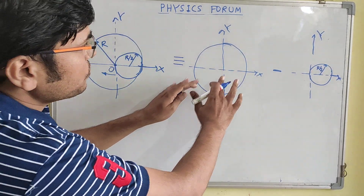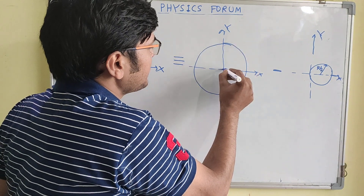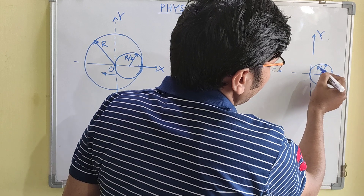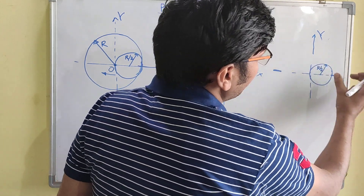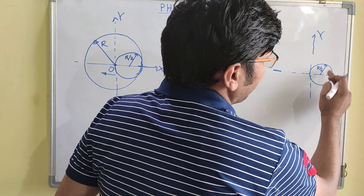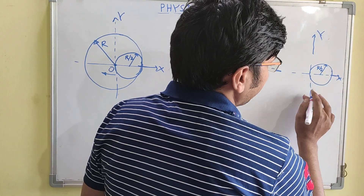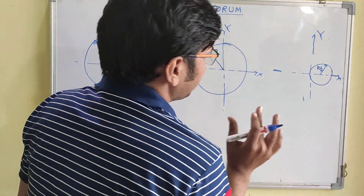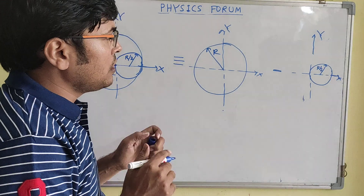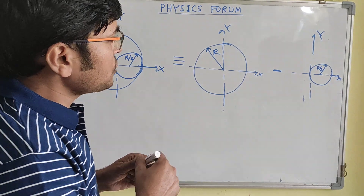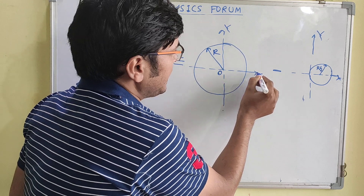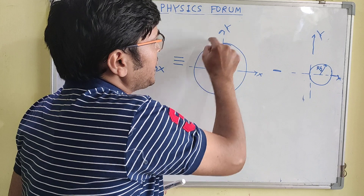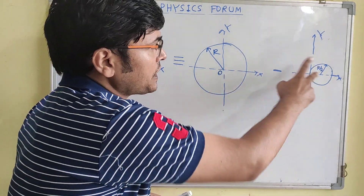This system is equivalent to two systems: one is the complete disk and second is the disk of smaller radius r by 2 which has been taken out. We will treat it as a negative mass. To calculate the center of mass of this system, we first have to assign the x and y axes for both parts — we have to stick to this particular coordinate system in both cases.